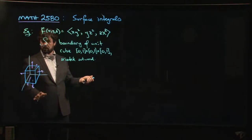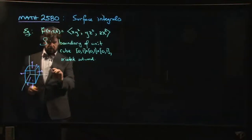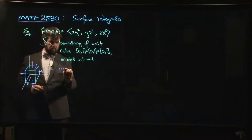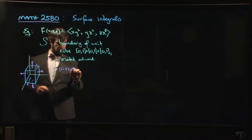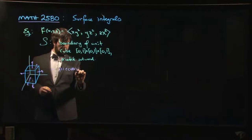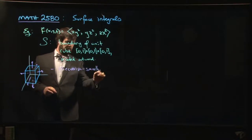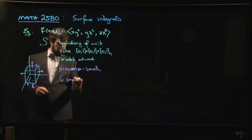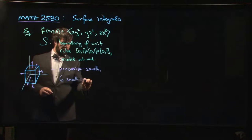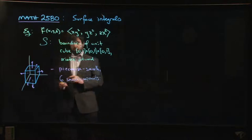Our surface is the boundary of the unit cube, right? So the main trouble here is that this is piecewise smooth, and it has six smooth components.